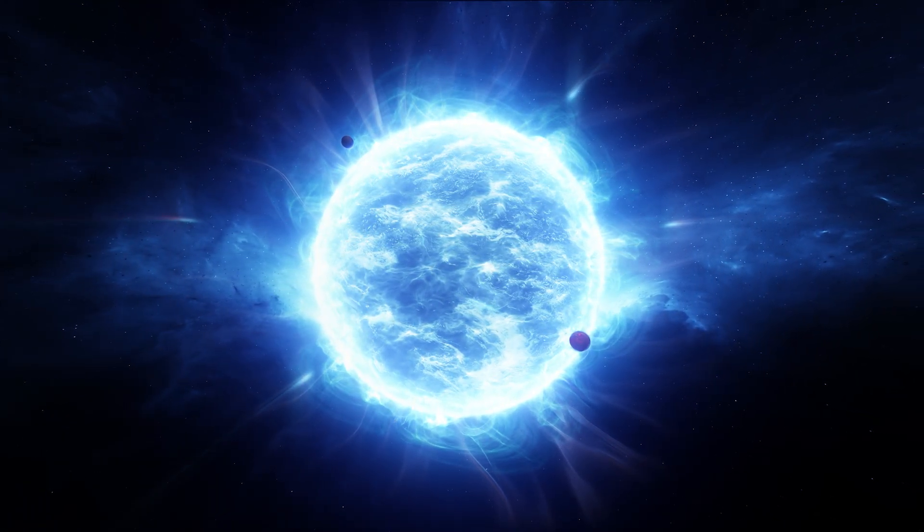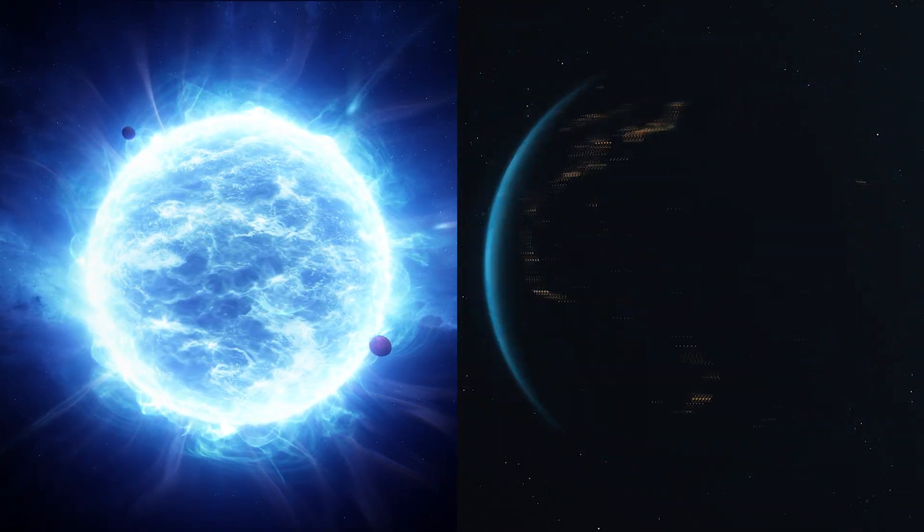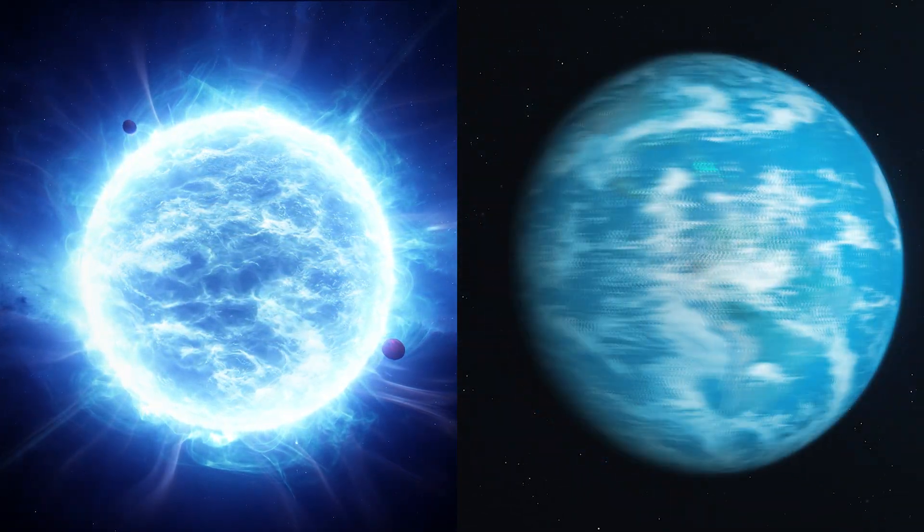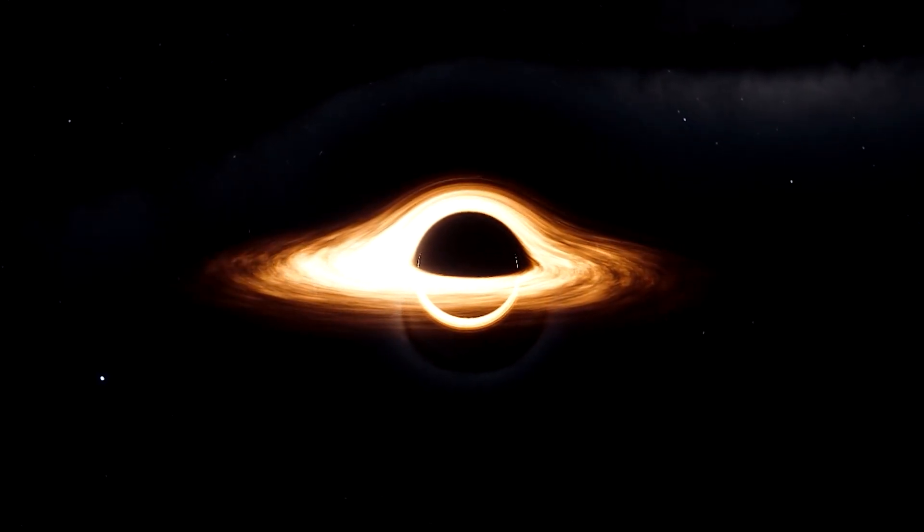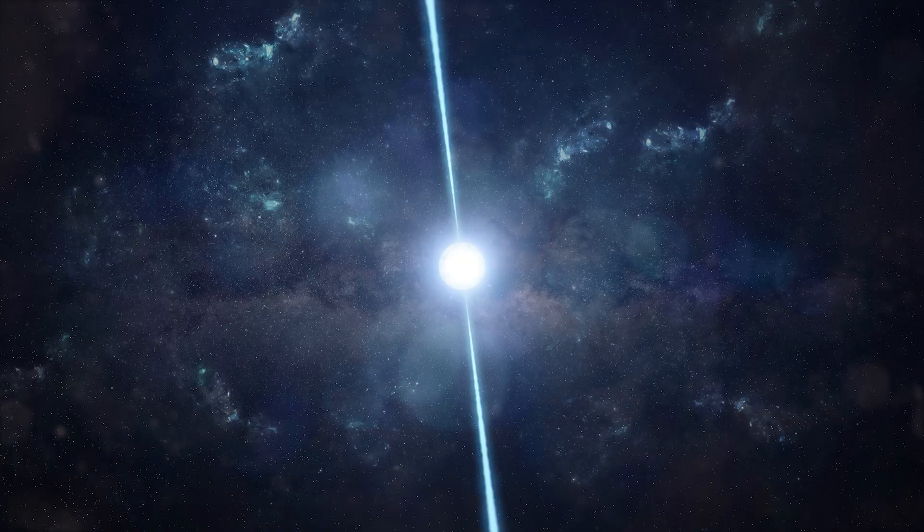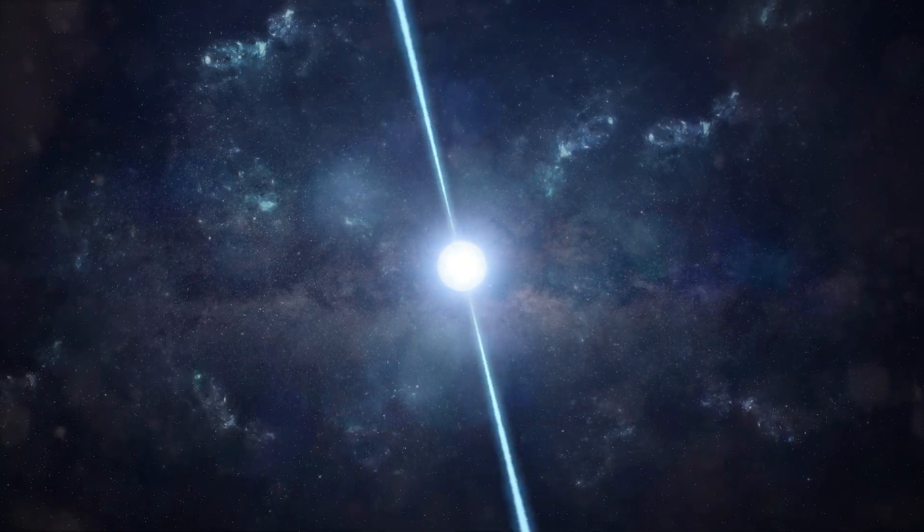To give you an idea, if you spent an hour on a neutron star, a little more time would have passed on Earth, but not by the same extreme factor as with a black hole. So while black holes hold the record for the slowest clocks in the universe, neutron stars aren't too far behind.